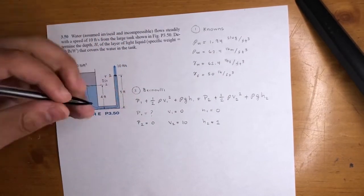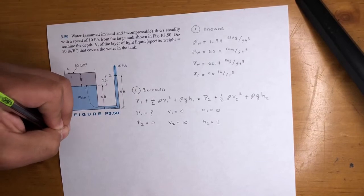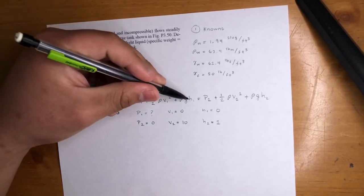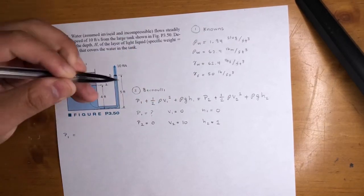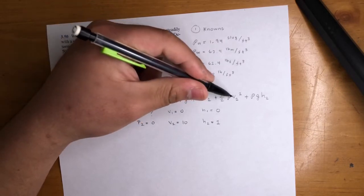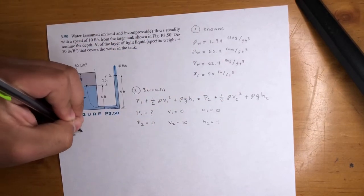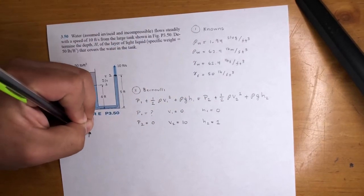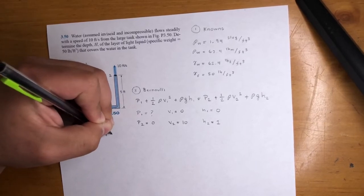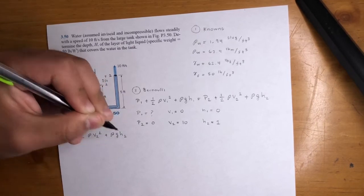So we got all that. So that means P1, right? Bernoulli continuing. P1, V1 is zero, H1 is zero. So those canceled out. P2 is zero, and V2 there's a number. H2, there's a number. Cool. So we got these two terms. One half rho V2 squared plus rho GH2.